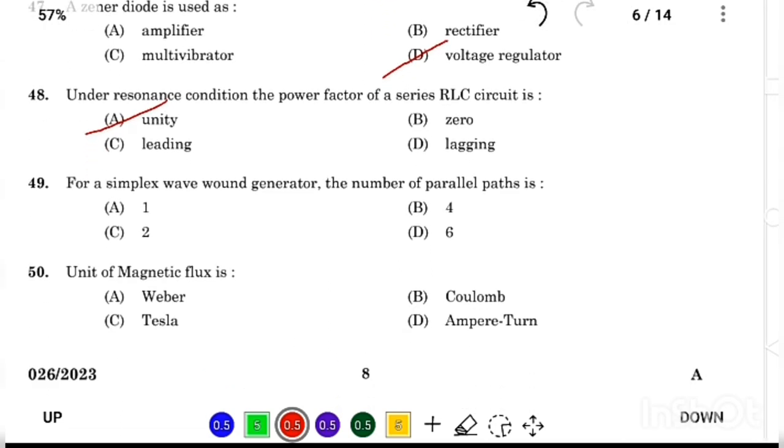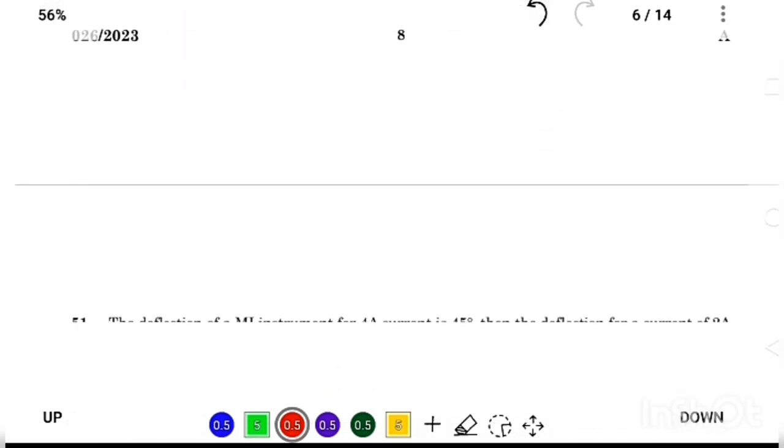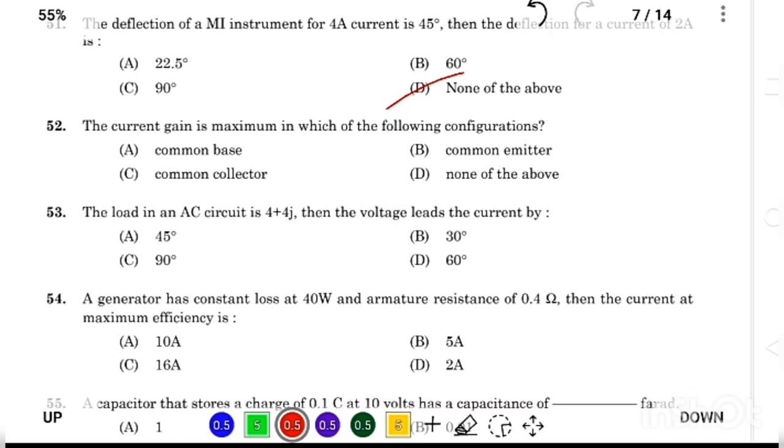For a simplex wave wound generator, the number of parallel paths is Answer Option C, 2. The unit of magnetic flux is Answer Option A, weber. The deflection of a MI instrument for 4A current is 45 degrees, then the deflection for a current of 2A is Answer Option D, none of the above. The current gain is maximum in Answer Option B, common emitter configuration.